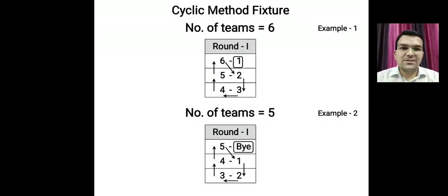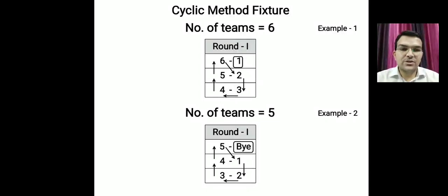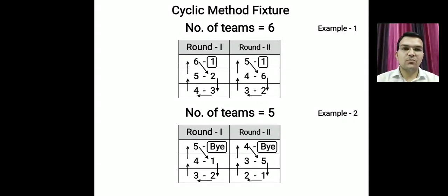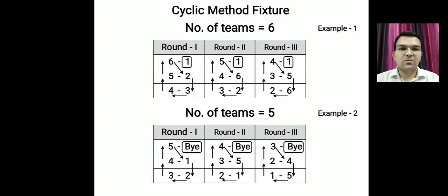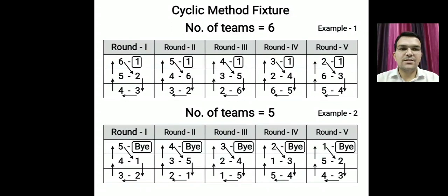In the next rounds, team number one and the bye do not change their position — they remain fixed in every round. The remaining teams move in a clockwise direction as shown by the arrows. So in round two every team moves one step clockwise, in round three they move one step ahead again, and so on for rounds four and five.